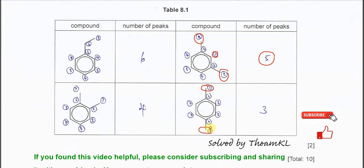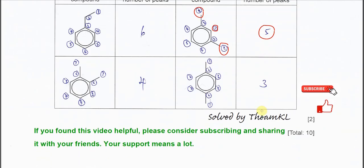For the last compound S, these carbons are equivalent, this is another signal, this is another, and these four carbons are all equivalent. So even though there are many carbons, it produces just three signals. Put three here. That's all, thank you.